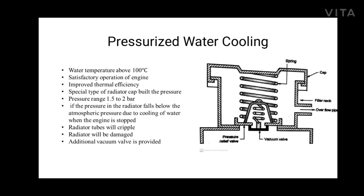If the pressure in the radiator falls below atmospheric pressure due to cooling of water when the engine is stopped, the radiator tubes will cripple and the radiator will be damaged. To avoid the formation of vacuum, an additional vacuum valve is provided. When the pressure in the radiator falls below atmospheric pressure, air from the surroundings enters through the side valve and prevents the drop of pressure below atmospheric in the radiator. The advantage of pressurized water cooling is that the engine can run more efficiently with high coolant temperature and without the loss of water vapour and anti-freezing mixture to the surroundings.